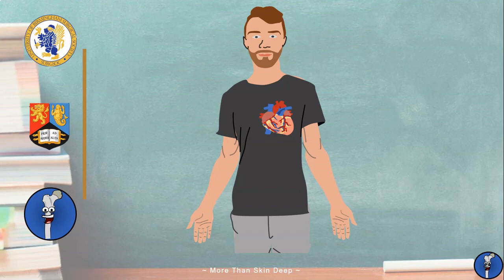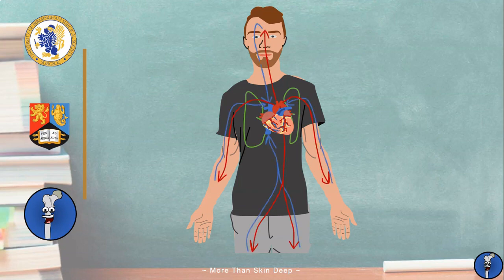Blood travels around your body in a complex circulatory system composed of two loops. The pulmonary circulation taking deoxygenated blood to your lungs and the systemic circulation taking oxygenated blood to the rest of your body before returning it to the heart.